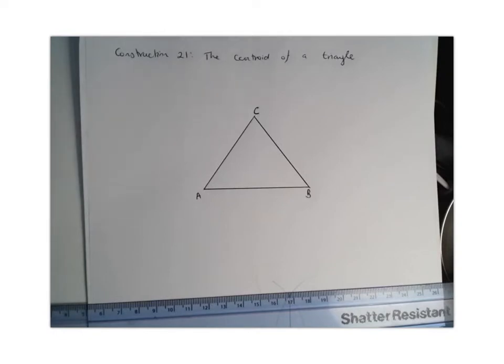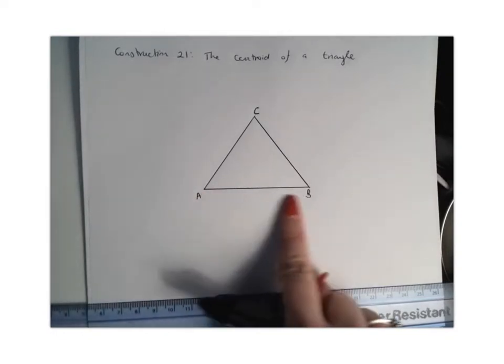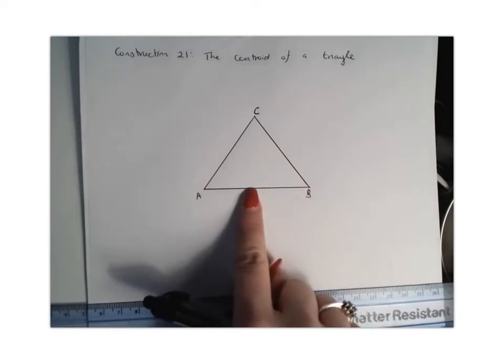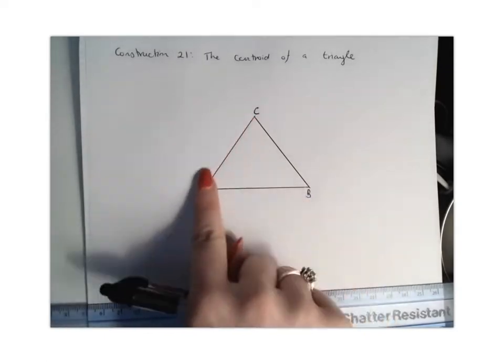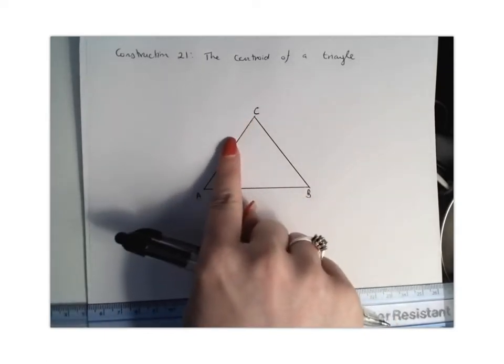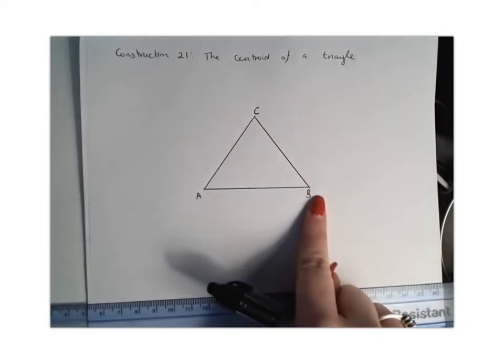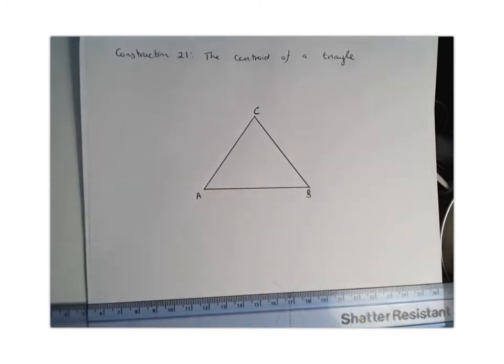So what a median basically is, is where we find the midpoint of a line, so it's going to be roughly here, and we join it to the opposite side's vertex. So we're going to take our midpoint and draw a straight line up to point C. And then we'll find the midpoint of this line and join it down to point B. They will be the medians, and where those medians intersect is going to be your centroid.